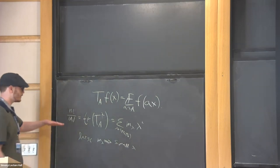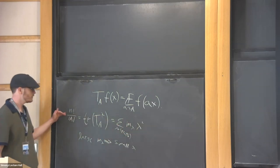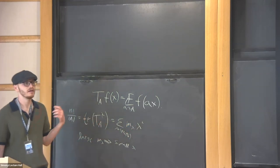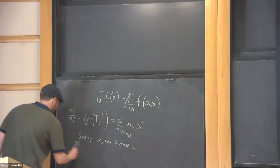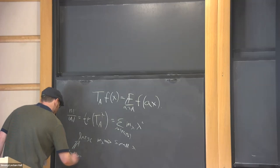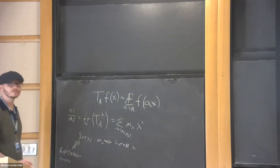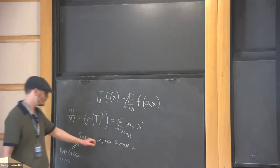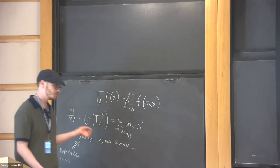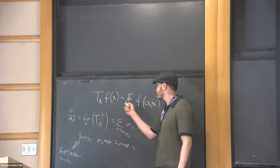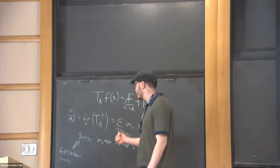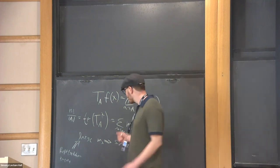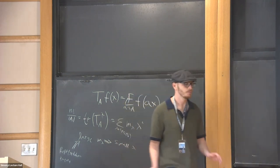If the multiplicity is large and the set is large, you can deduce that the eigenvalue is small. This operator T_A commutes with right multiplication, implying each eigenvalue has large multiplicity, which forces eigenvalues to be small. That was Gowers' argument — it uses only the smallest dimension of the representation.